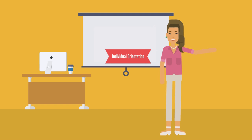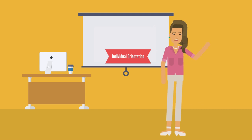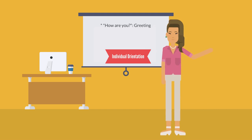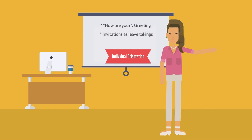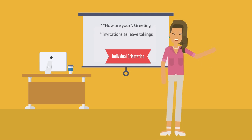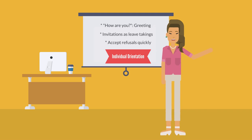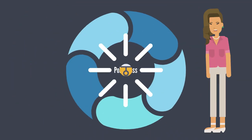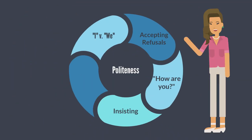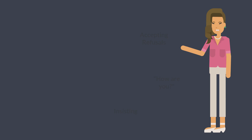On the other hand, speakers who are more individually oriented tend to protect individuality and freedom of action. For example, these speakers might use questions like "How are you?" as greetings instead of invitations to conversations, use invitations to future events as a way to end a conversation rather than to make an actual plan, and accept invitation refusals quite quickly.